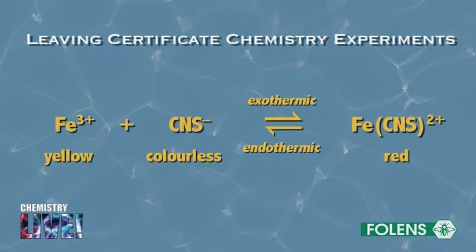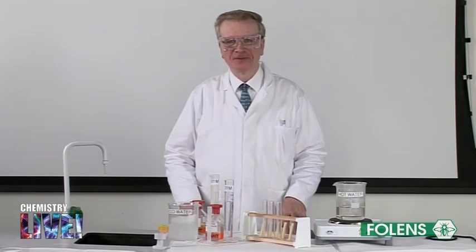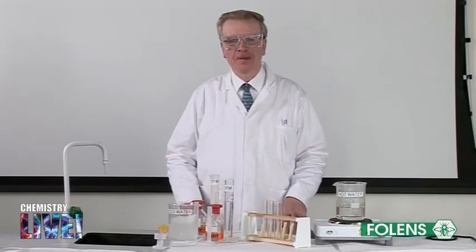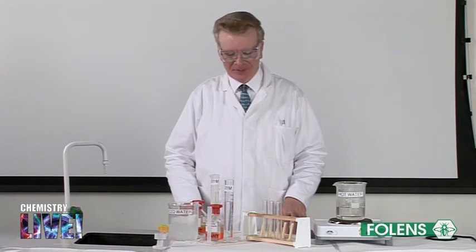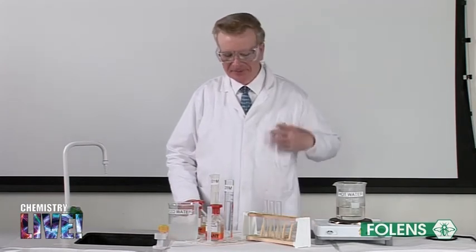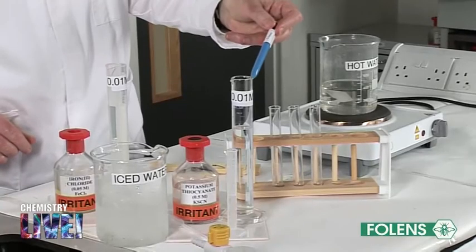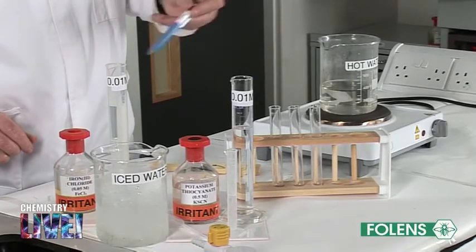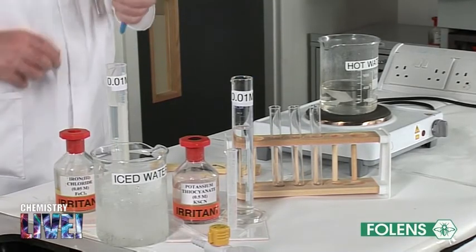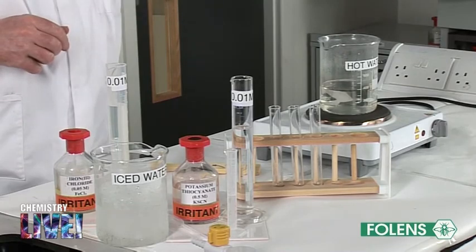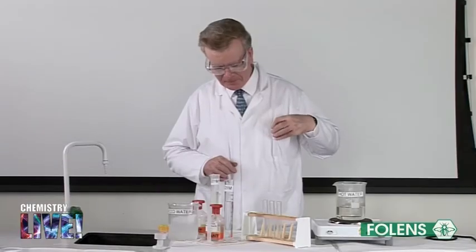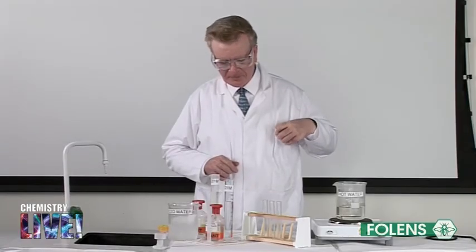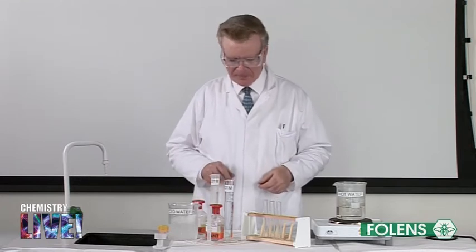In part B of this experiment, we will investigate the effect of temperature on the equilibrium reaction shown on the screen. The effect of heat on the equilibrium is more difficult to show, so we will dilute the solutions used in the first part of the experiment. Each of the solutions has been diluted to a concentration of only 0.01 moles per litre in order to try to see the colour changes more clearly.